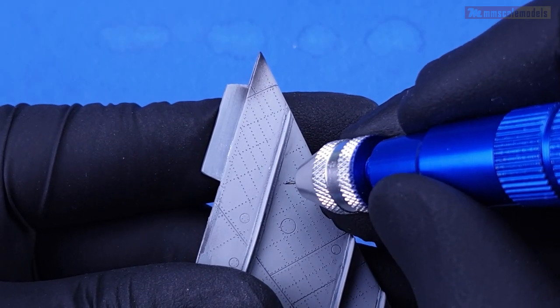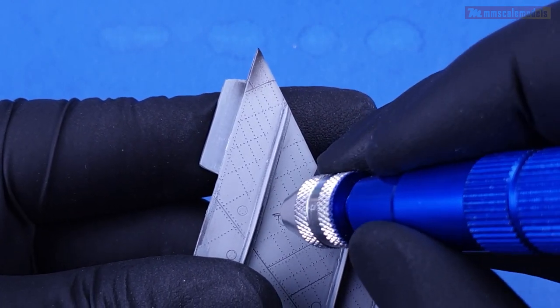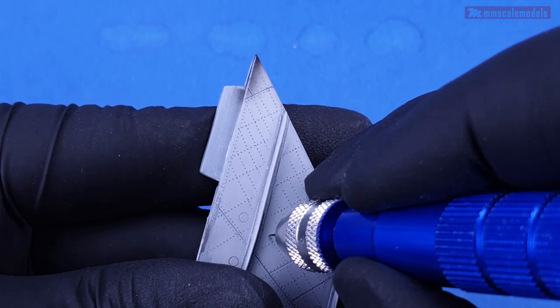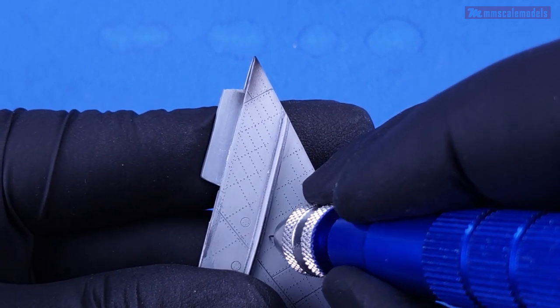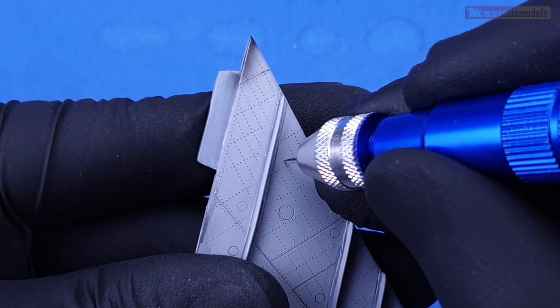Although my riveting wheel is quite small I was still not able to reach in the corners. So here I had to use a needle in a pin vise to poke the rivets. Not the most accurate way but still better than unfinished rows.